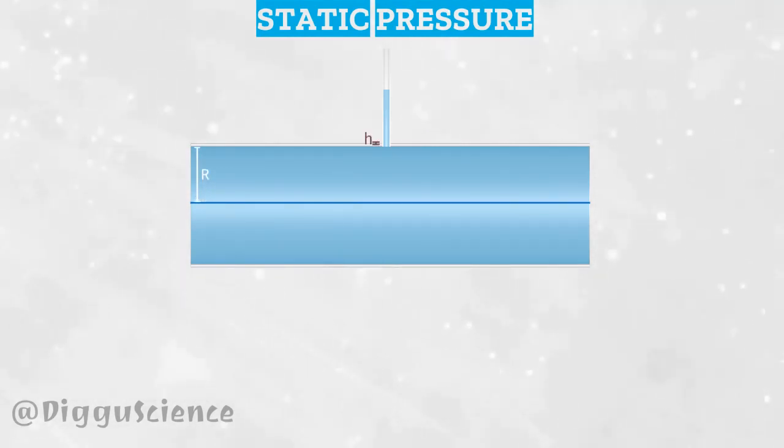If the radius of the pipe is r and the value read on the piezometer is h, then the static pressure of the fluid flow in the pipe is p equals rho g h plus r. Static pressure is the pressure of fluid flowing in a pipe.